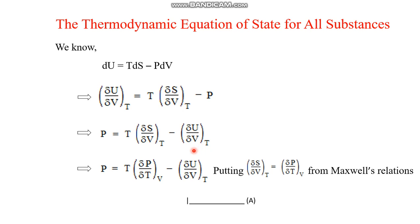Now, from Maxwell's relations derived in the previous lecture, in place of (∂S/∂V)_T we can substitute (∂P/∂T)_V. If asked from which relationship this is obtained, since there are V and T involved, this comes from the Helmholtz free energy A — from dA. So instead of (∂S/∂V)_T we put (∂P/∂T)_V. This gives us one of the thermodynamic equations of state, denoted as Equation A.